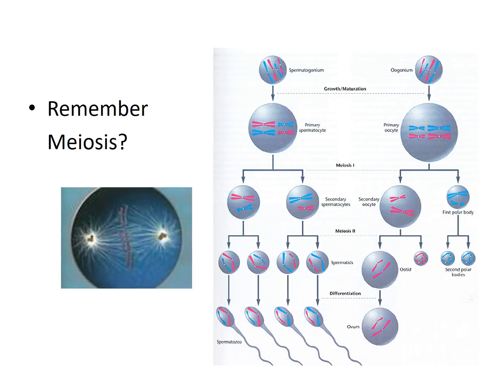Remember meiosis? That was the process of producing gametes — sex cells used for reproduction — and they contain half the chromosome number. Meiosis was important because it was a way of mixing up the chromosomes and producing gametes with half the normal chromosome number. This provides gametes that are different from each other, so you get variation in the population. This is why you and your brothers and sisters are not necessarily identical — you all have different gene combinations even though you have the same parents.